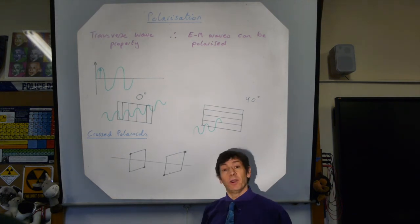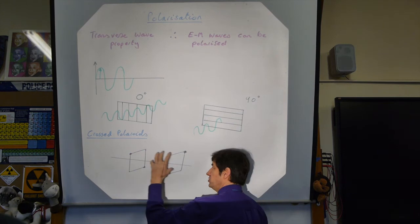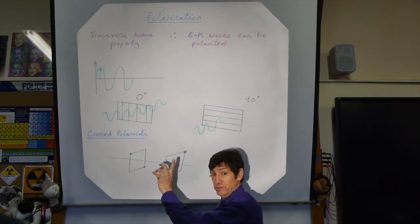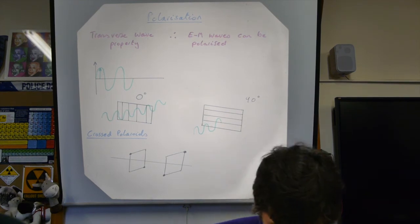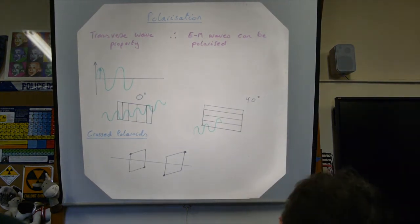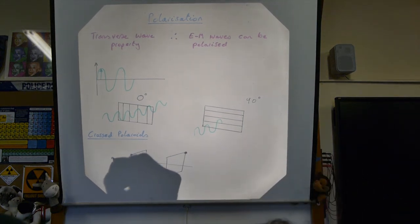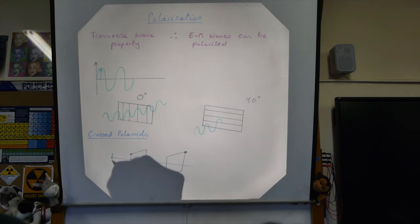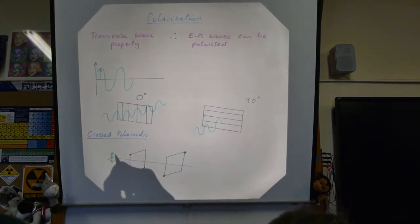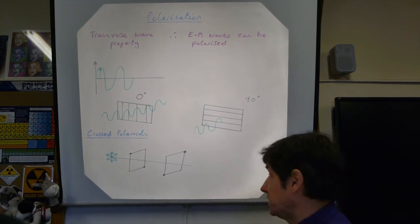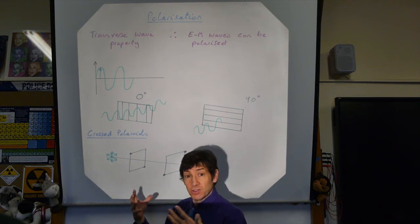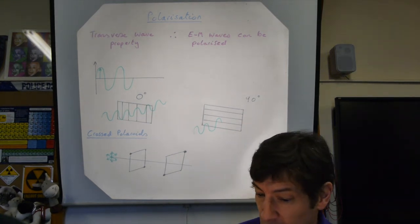Now let's look at crossed polaroids. I've drawn a central axis and two sheets of polaroid — or two polarisers. For radio waves, they'll need to be metal grills. We'll put our source of electromagnetic waves here, showing it's producing waves that come off it in all polarisations — random polarisation. Sometimes oscillating in one direction, sometimes in another. There's a whole range of polarisations coming off this source, which would be typical for a light bulb.